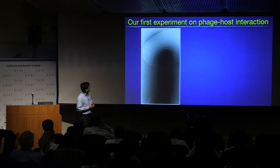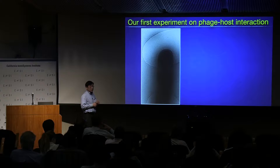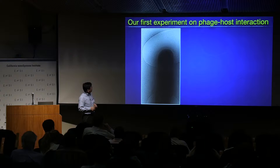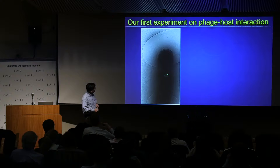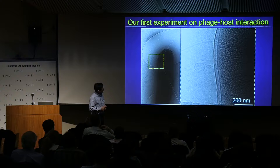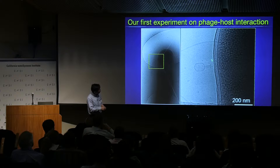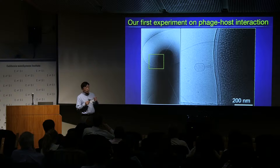We started with our first experiment many years ago, infecting E. coli cells with T4 phage. You can see an E. coli cell — it's very hard to see the small T4 there. By zooming in, you can start to see this tiny T4 already contracted, with DNA already released. But the resolution is relatively low because the cell is about one micron — it's very dark and hard to see the detail.